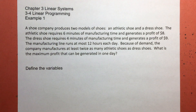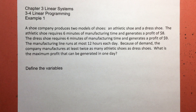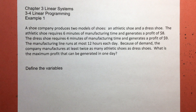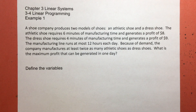The athletic shoe requires six minutes of manufacturing time to make. That doesn't seem like a lot of time, but for a major factory cranking these things out, six minutes might be the total time on an assembly line. This athletic shoe generates a profit of $8 — meaning after you subtract out material costs, wages, machinery, and any other costs, you end up with $8 profit. The dress shoe requires four minutes of manufacturing time and generates a profit of $9.